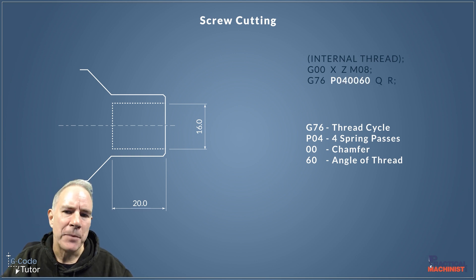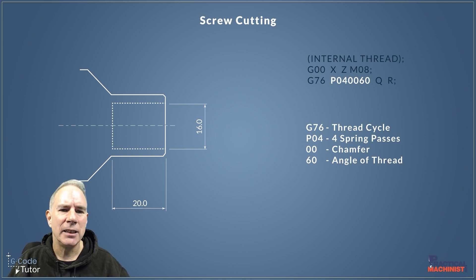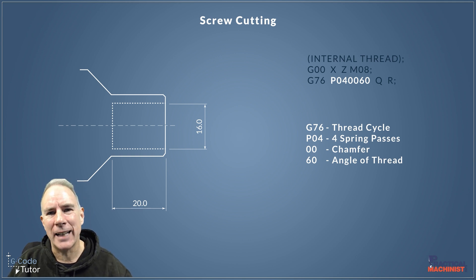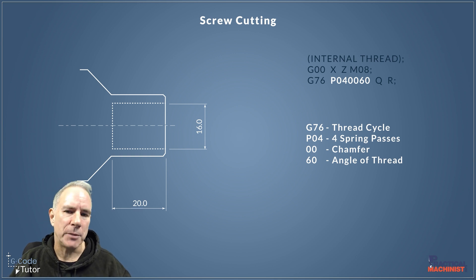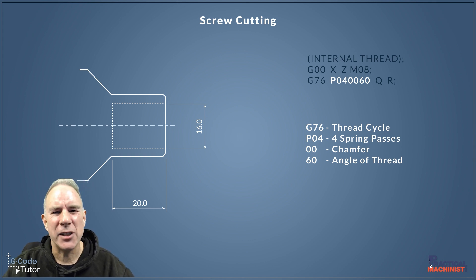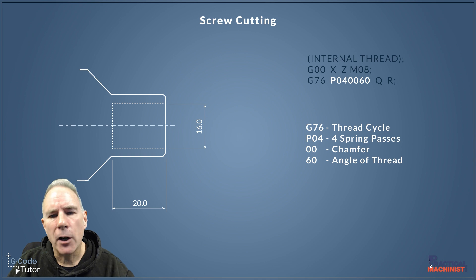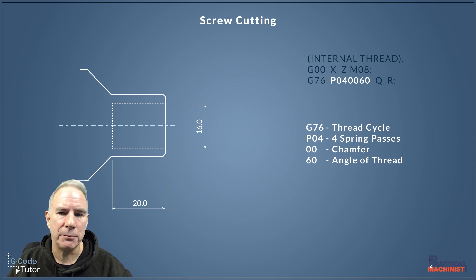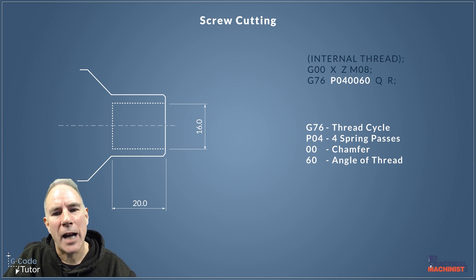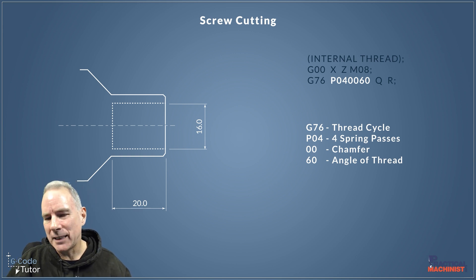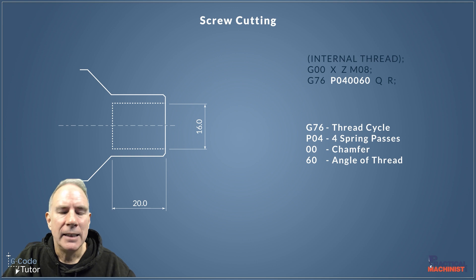The P04 here means we're having four spring passes — we'll machine to size and then keep the machine at that size without changing the X diameter four times. This helps clean up the thread, as threads can sometimes have chatter or a bad finish. The second two digits of the P code are our chamfer — the lead-out chamfer angle. The final two digits are our angle of thread: 60 degrees for metric, or 55 degrees for imperial. So the P word contains three lots of information.